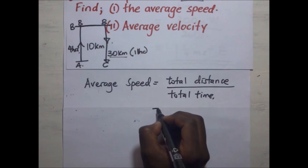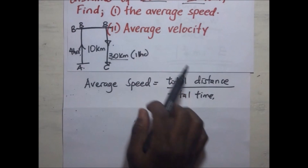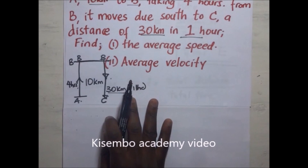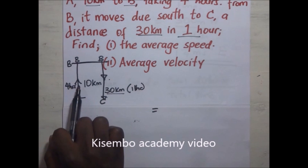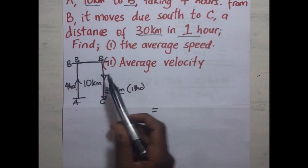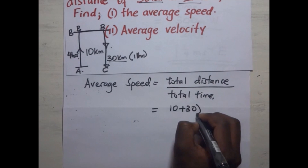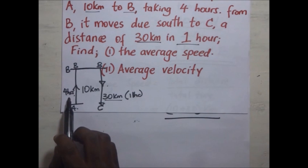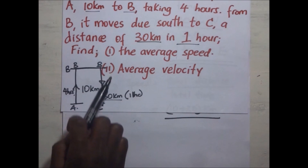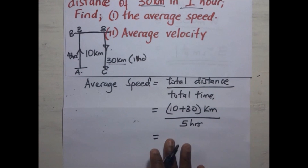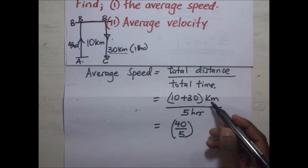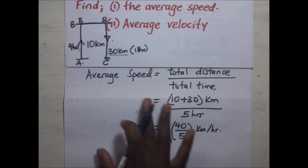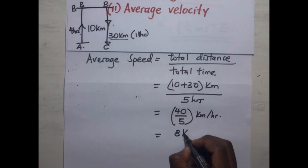For average speed: total distance is 10 plus 30 equals 40 kilometers. Total time is 4 plus 1 equals 5 hours. Average speed equals 40 divided by 5, which equals 8 kilometers per hour.